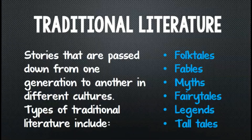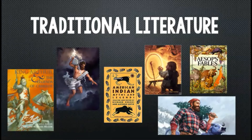The final subgenre of fiction that we'll talk about is traditional literature, which are stories that are passed down from one generation to another in different cultures. Types of traditional literature include folk tales, fables, myths, fairy tales, legends, and tall tales. Examples include the legends of King Arthur and the Knights of the Round Table, the mythical tales of the Greek and Roman gods, Native American myths and legends, fairy tales such as Rumpelstiltskin and Little Red Riding Hood, Aesop's fables such as the tortoise and the hare and the ant and the grasshopper, and American tall tales such as Paul Bunyan, John Henry, Davy Crockett, and Pecos Bill.